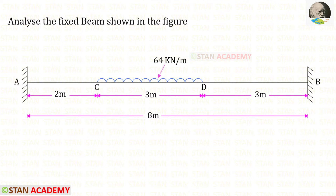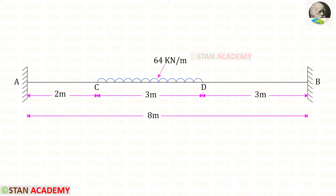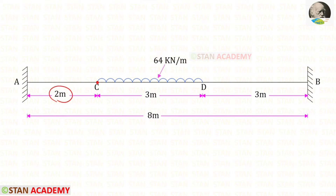Hello everyone. Today we are going to analyze this fixed beam. The span of the beam is 8 meters. We have a uniformly distributed load of 64 kilonewton per meter, acting for a distance of 3 meters. It starts at a distance of 2 meters from the left support and ends at 5 meters from the left support.